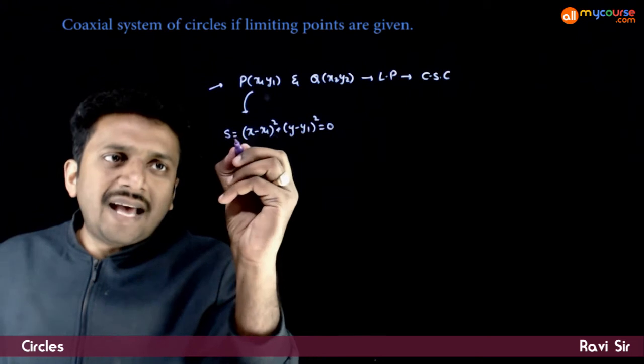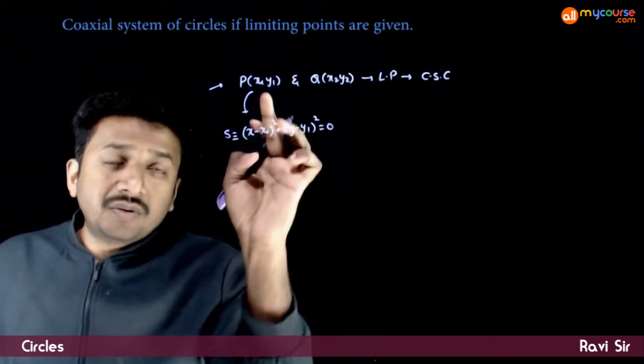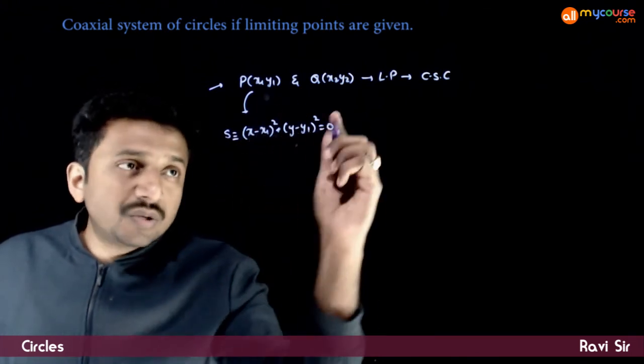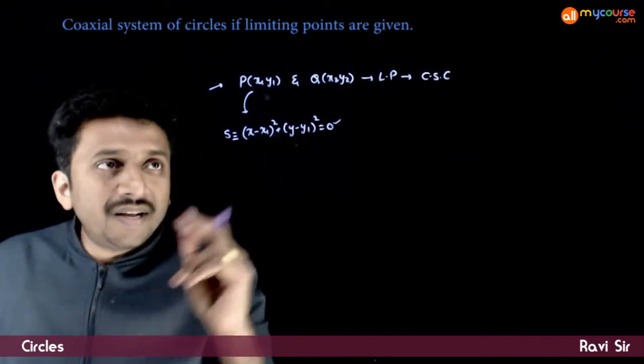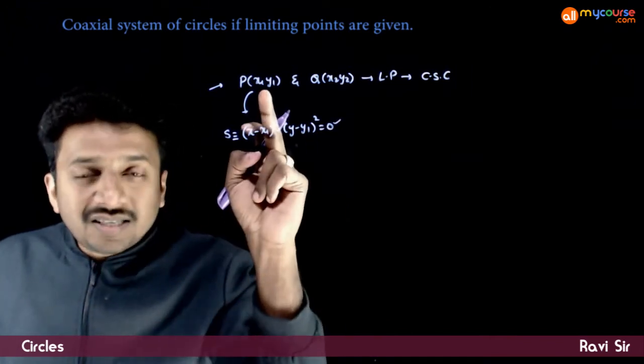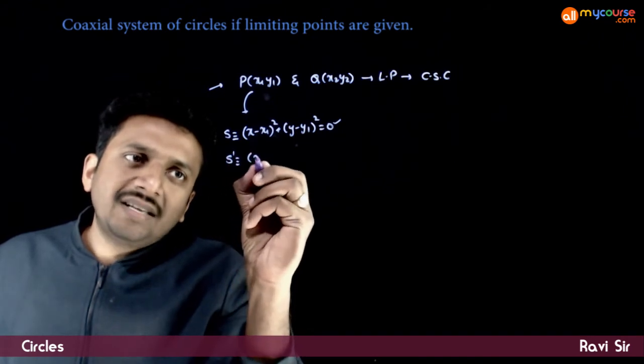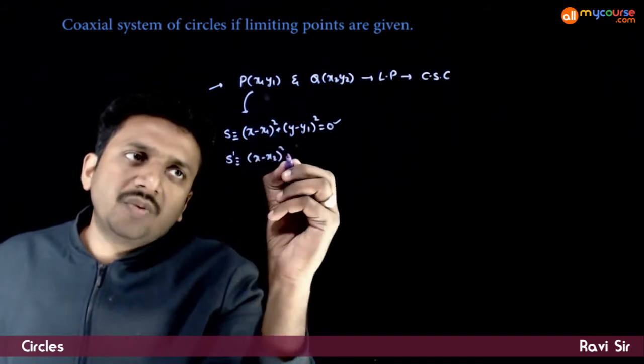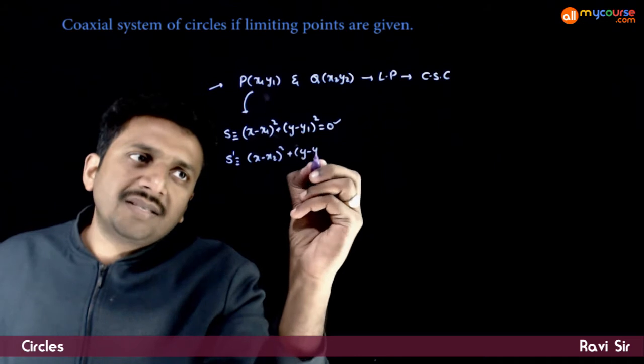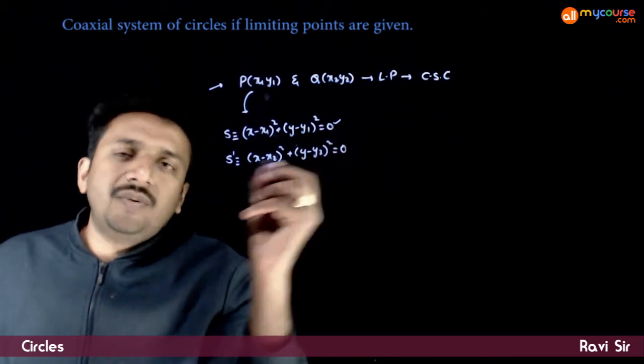Let us take S as (x - x1)² + (y - y1)² = 0. That is a point circle centered about x1, y1, and let us take S' as (x - x2)² + (y - y2)² = 0.